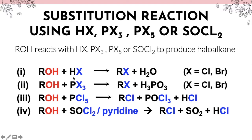Alcohol reacts with hydrogen halide HX — where X is a halogen — and X replaces the OH group in alcohol, making RX plus water. Second, alcohol reacts with PX₃, where phosphorus is bonded to three halogen atoms. Only one X atom replaces the OH group in alcohol, giving RX plus H₃PO₃.